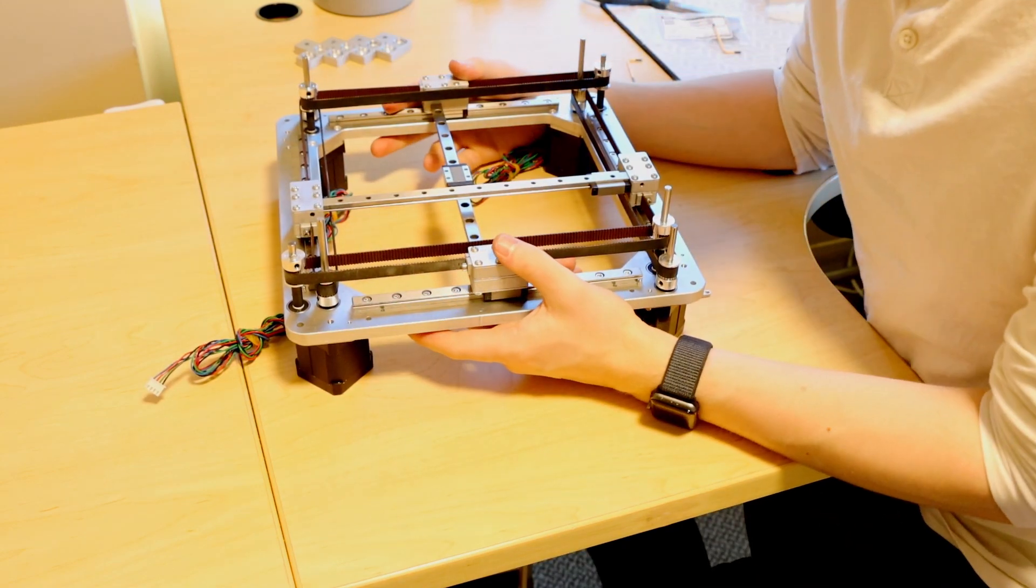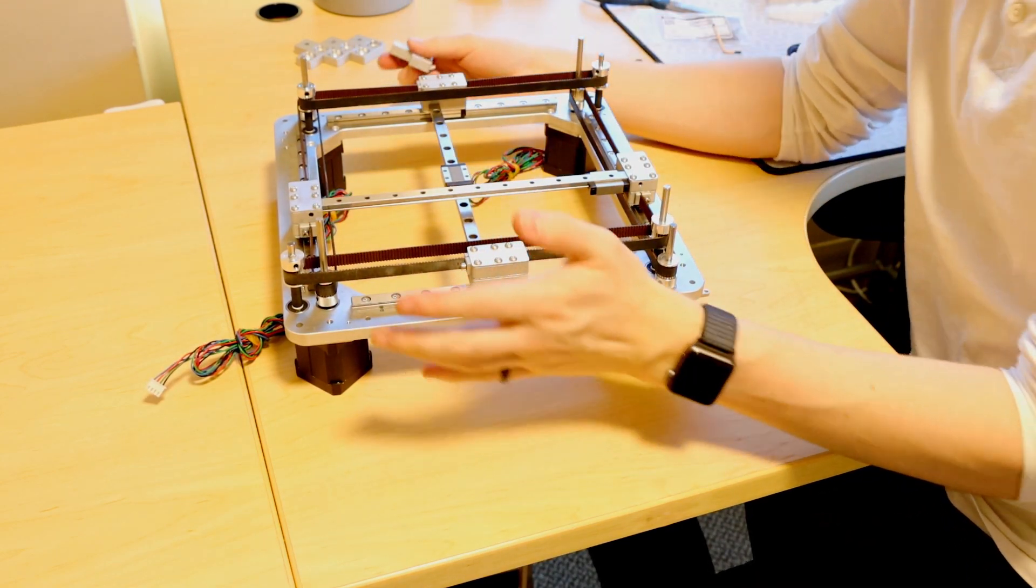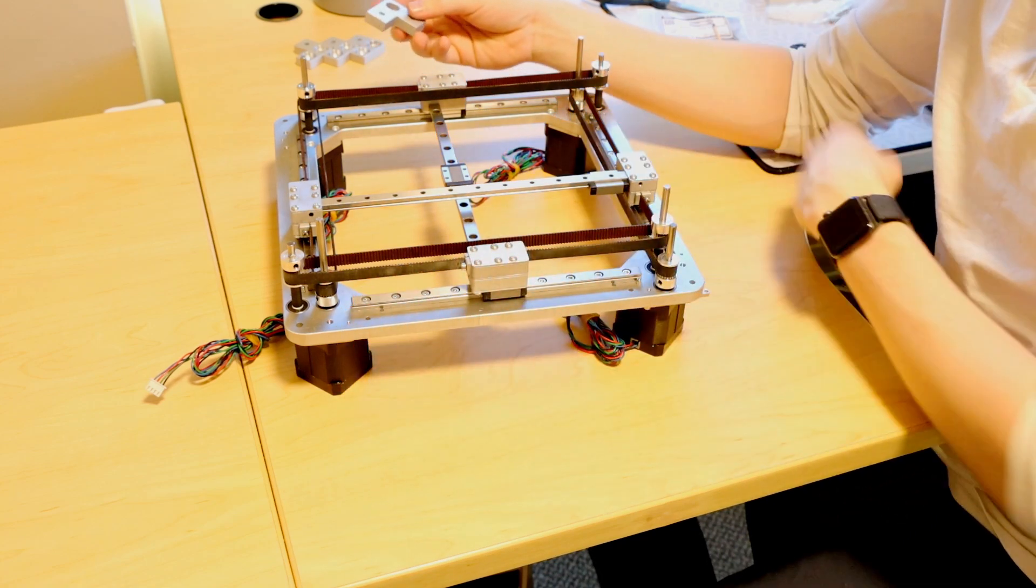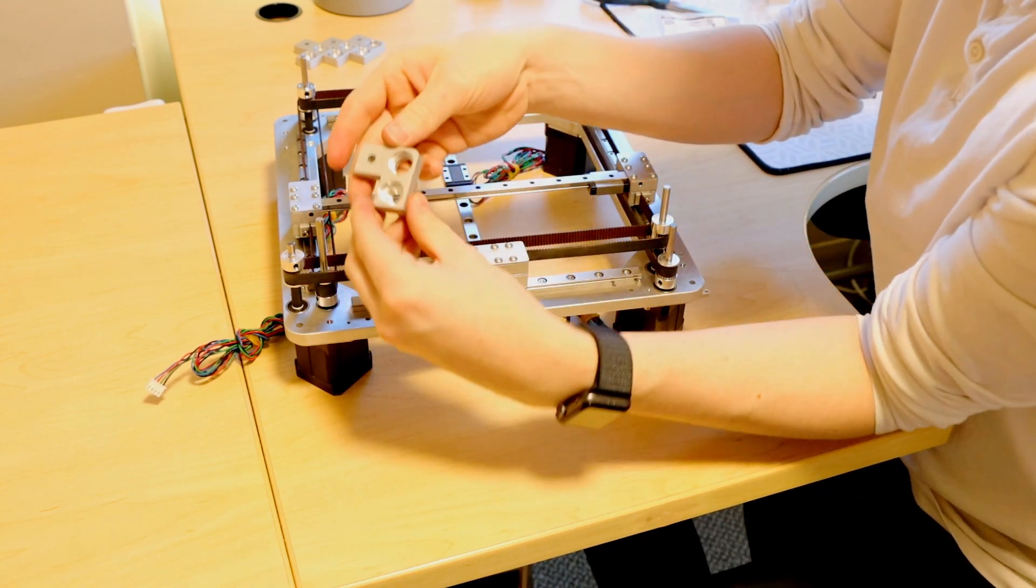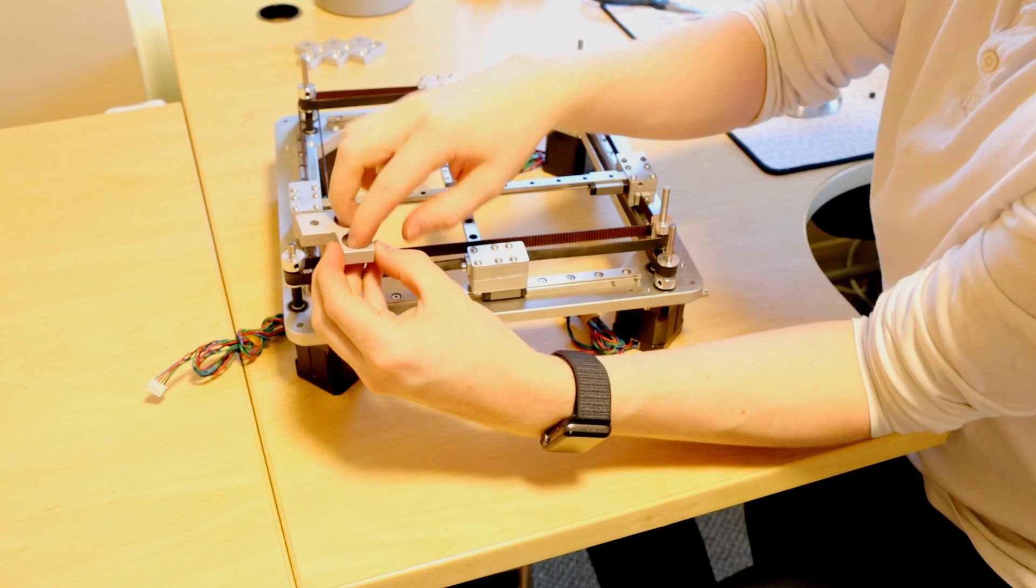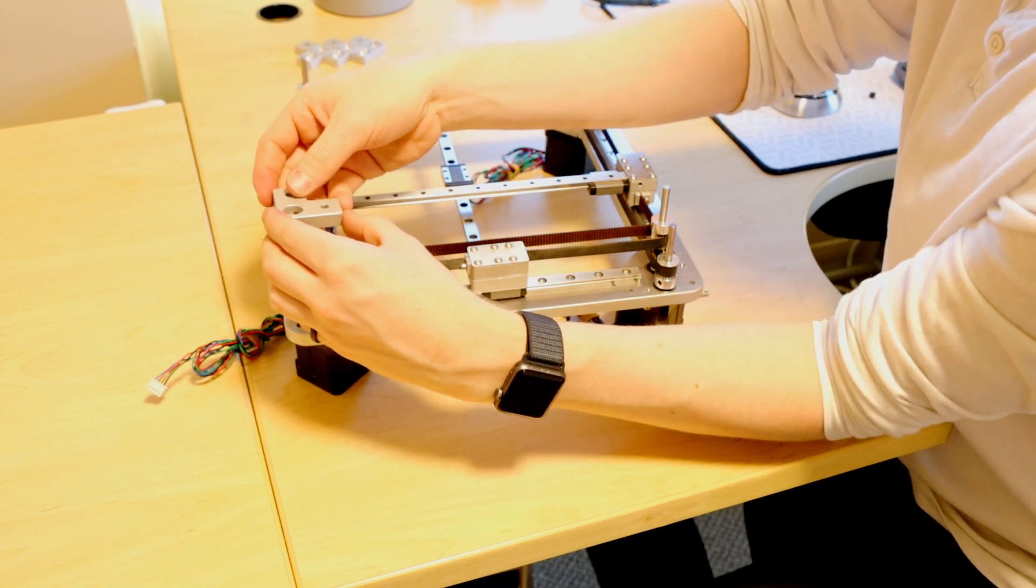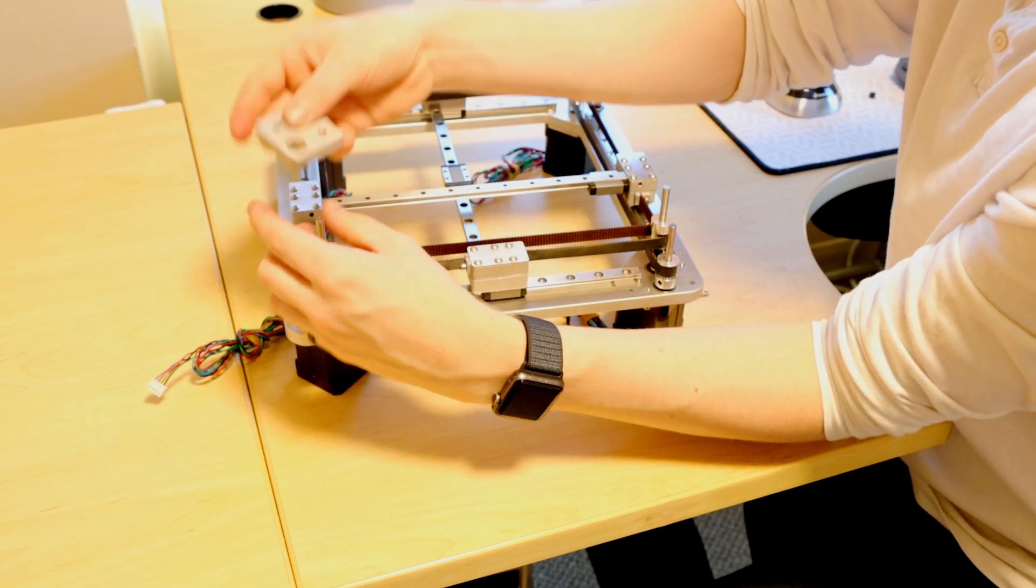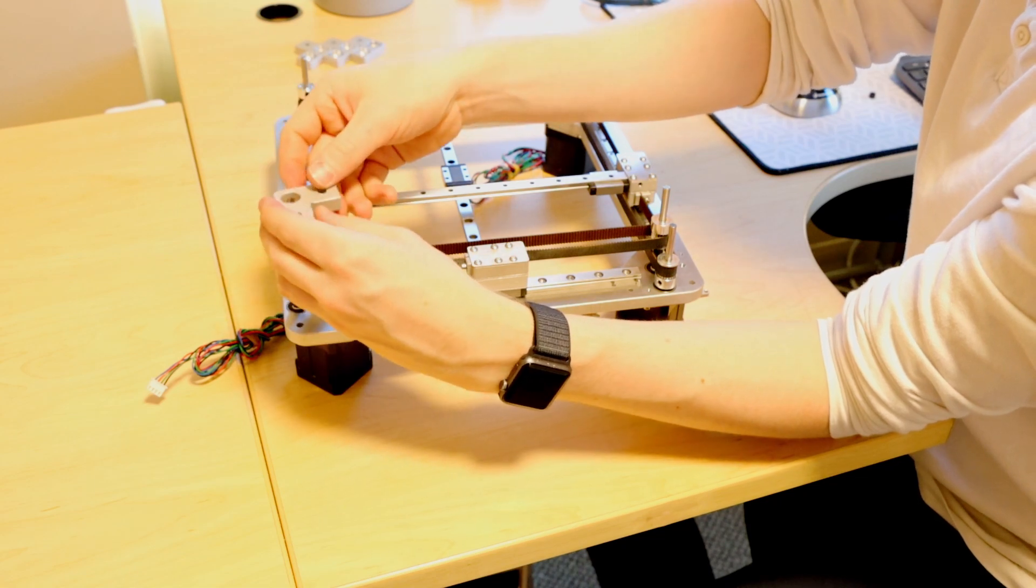This is as far as we're going to get in this video. When we actually integrate this with the rest of the printer we'll have these little additional plates right here that have two bearings each and those will kind of go in each corner like this and hold the entire thing to frame and also support it more.